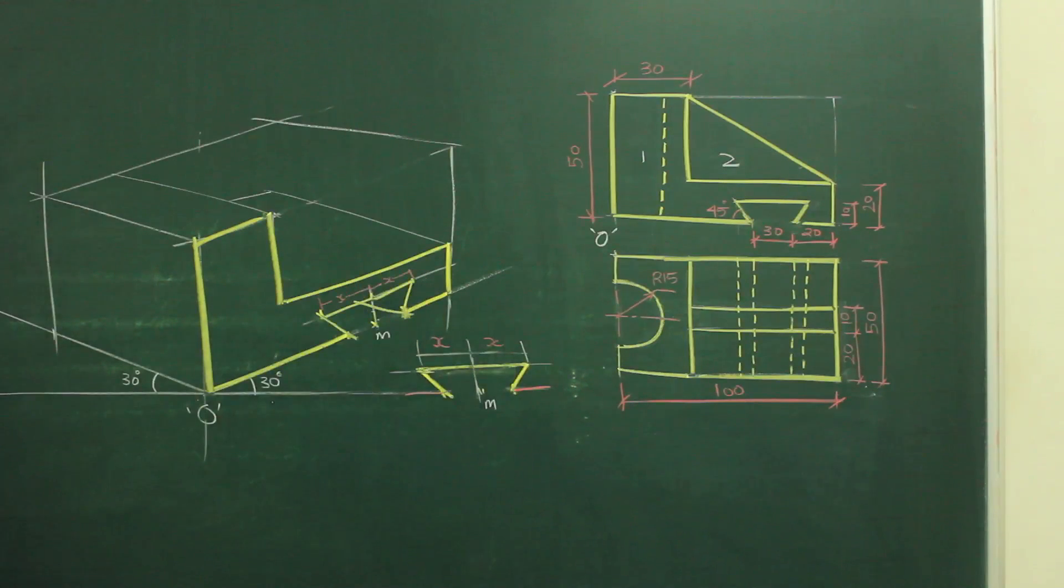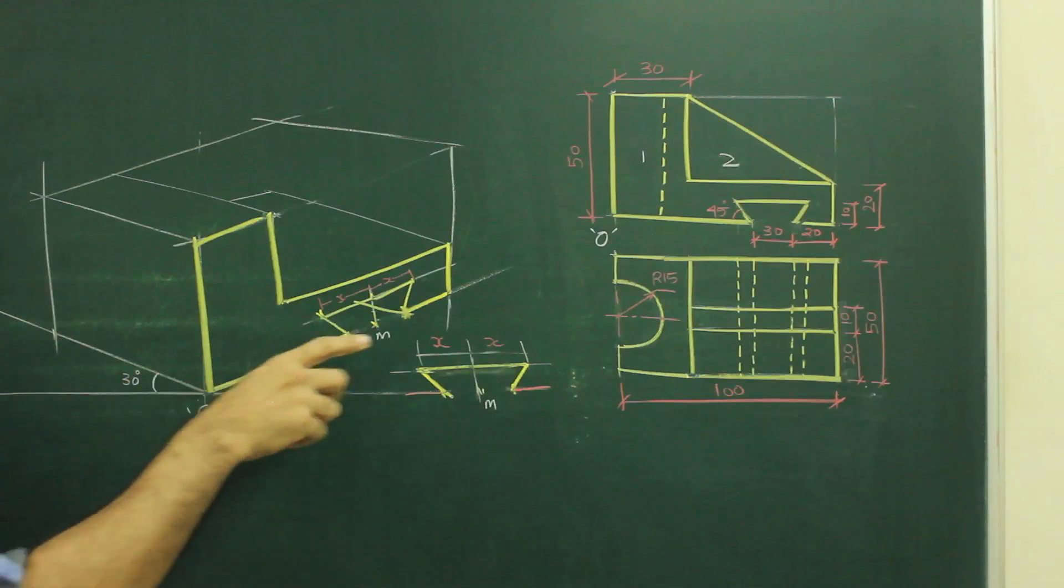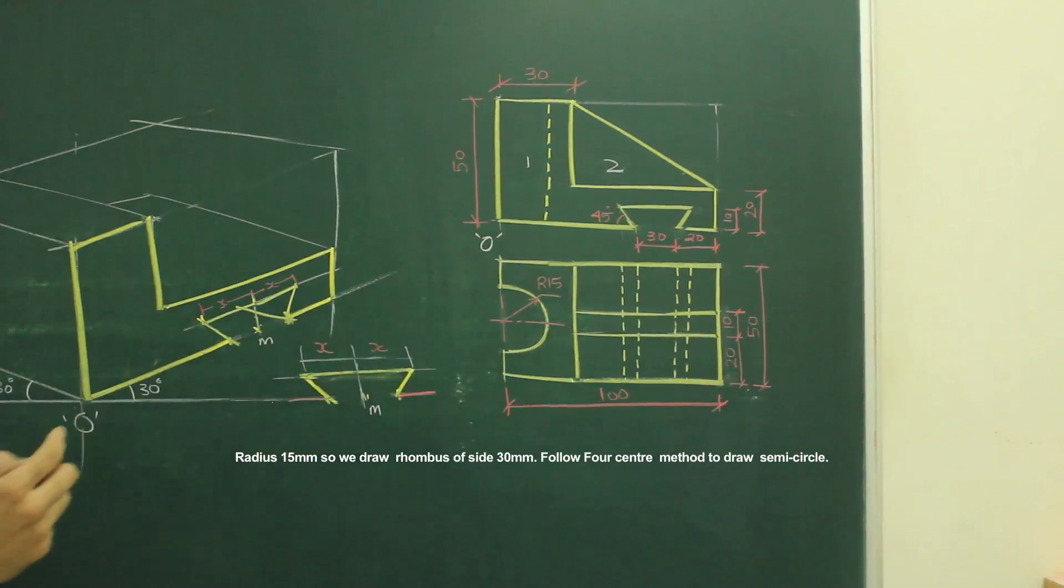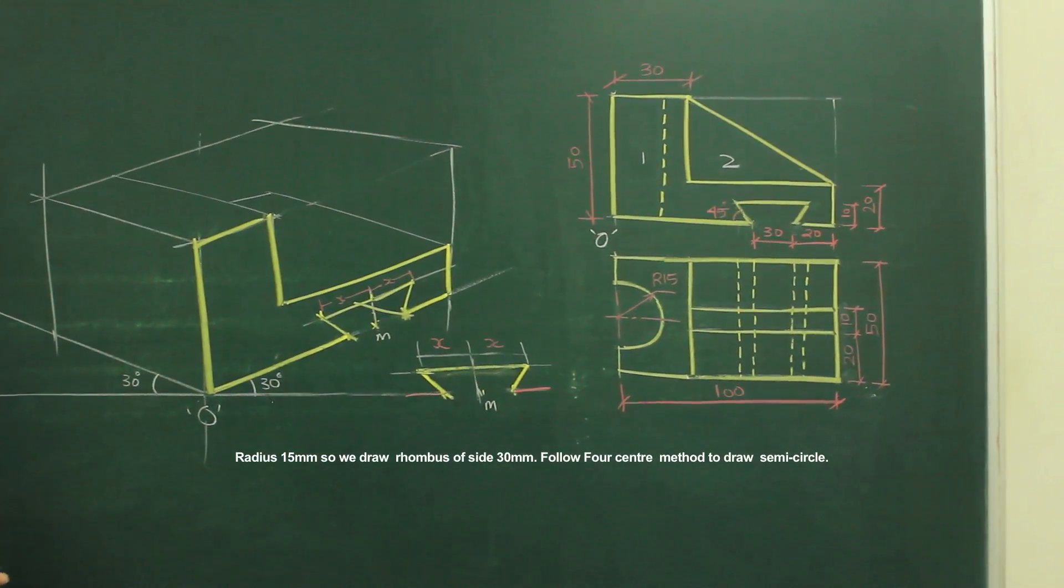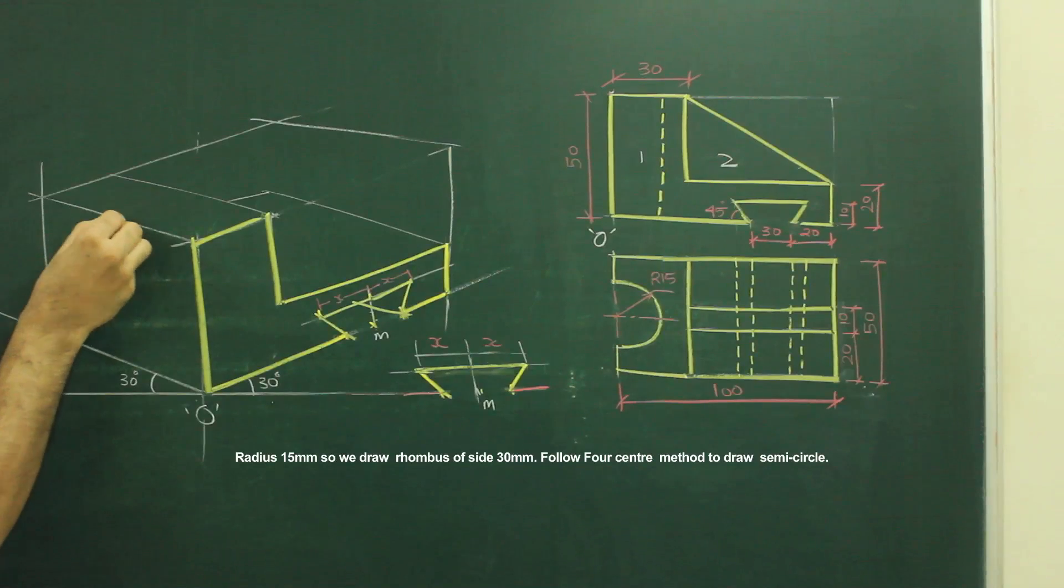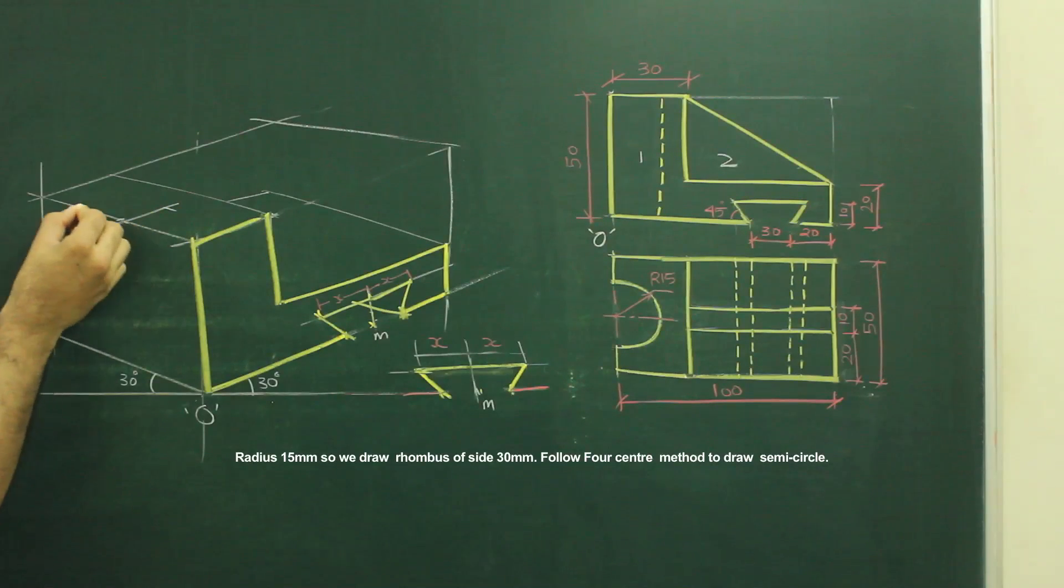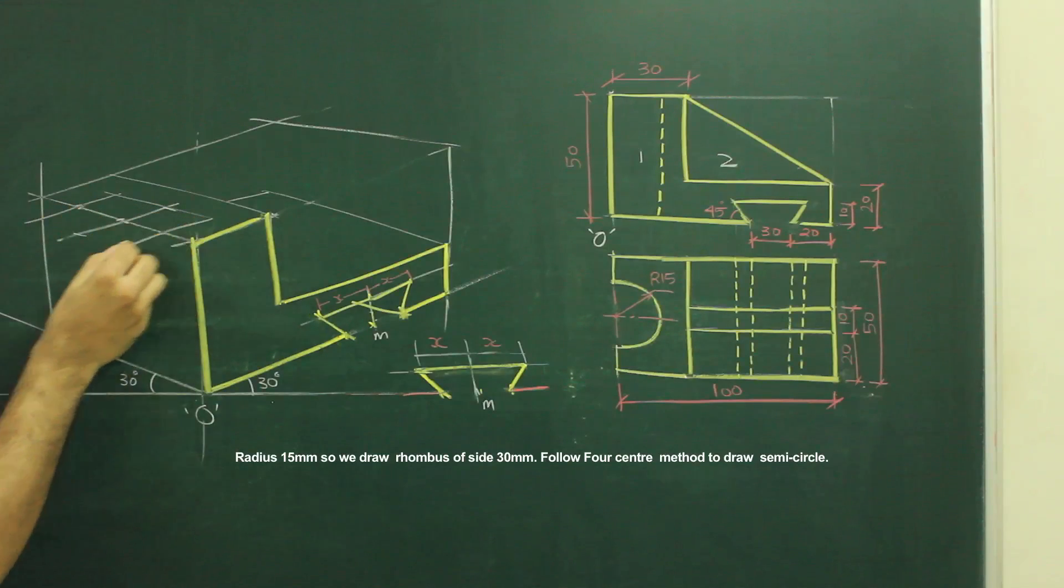Now after this, we need to see this part in top view, semicircle. That would be radius 15. So we need to draw rhombus 30. So what we will do, first we will mark this point, midpoint. I will draw line. And then from here I will mark 15, 15, 15, 15, 15. And I will draw rhombus.